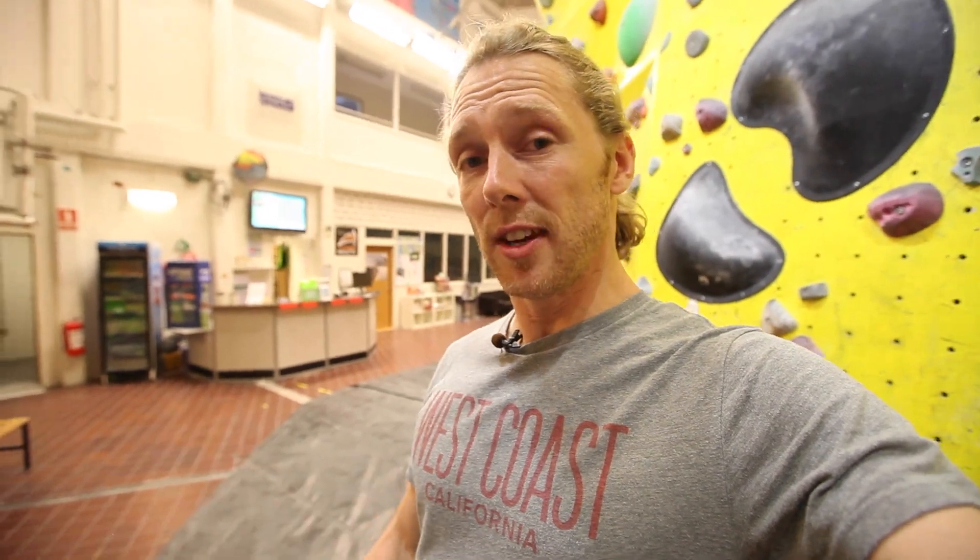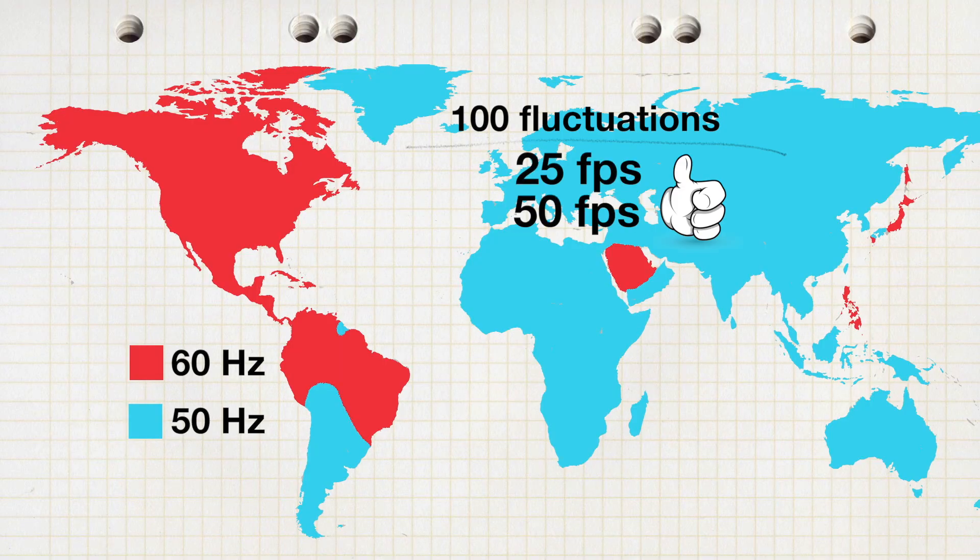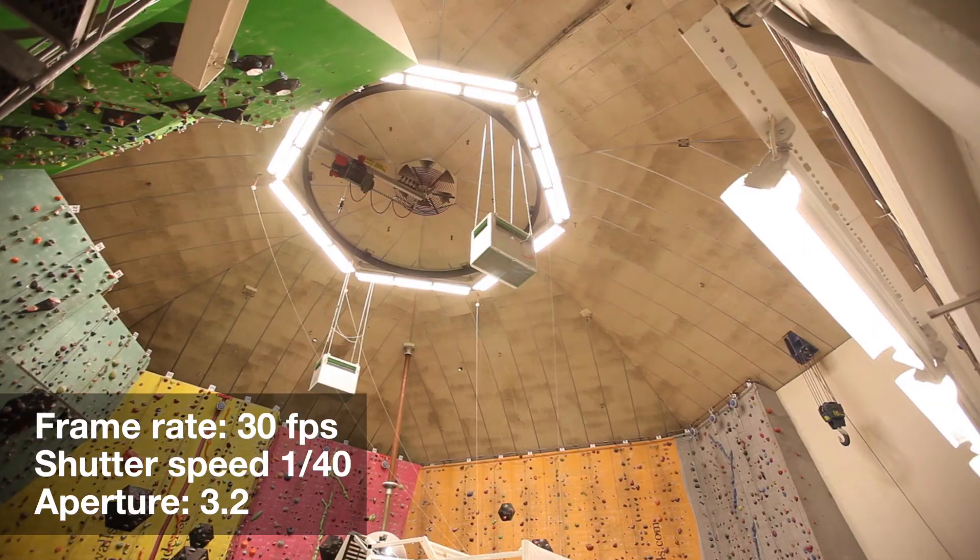Now here's my issue. I have a camera set up to shoot US video standard, which is 30 frames per second — really 29.97, but let's say 30 for simplicity. But I'm shooting a lot of my stuff here in Europe, which has a 50 Hertz AC frequency. 50 Hertz means 100 fluctuations per second, so shooting 30 frames per second with 100 fluctuations gives me some issues.